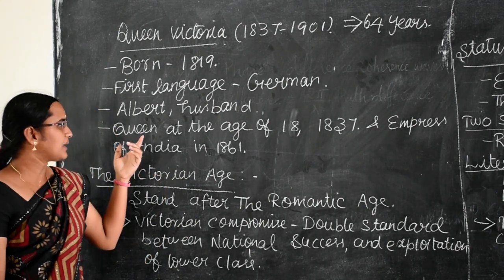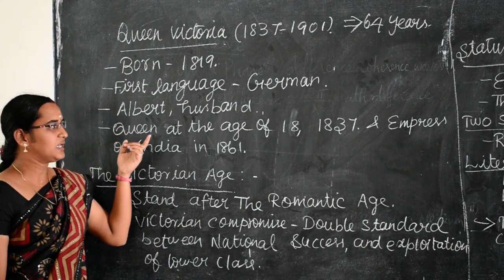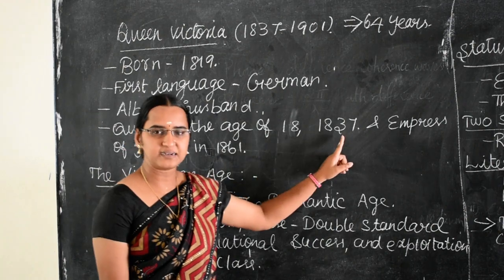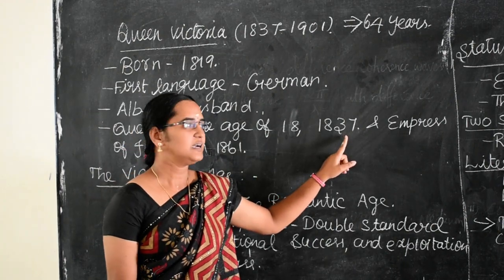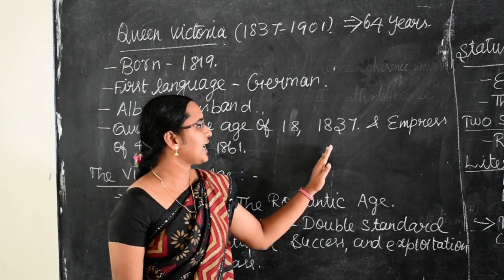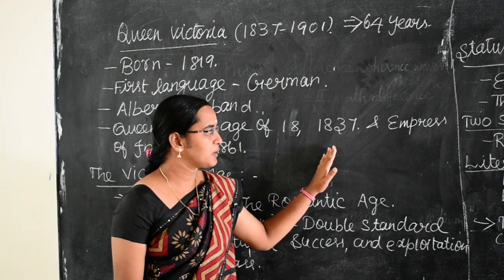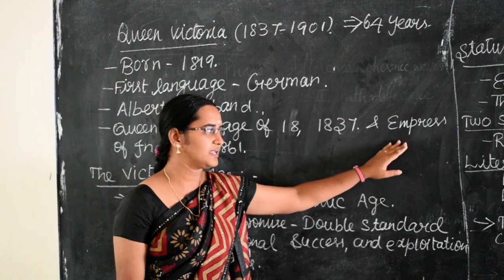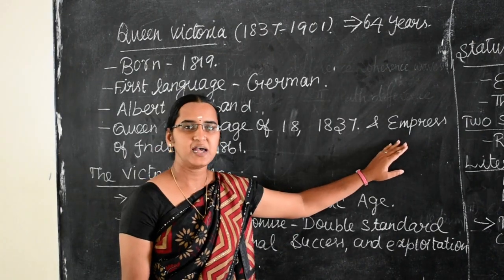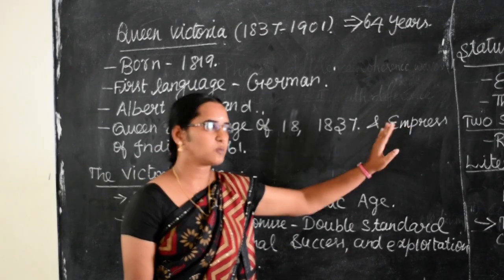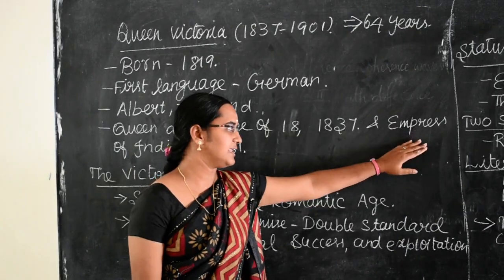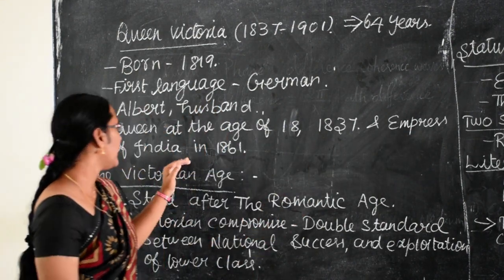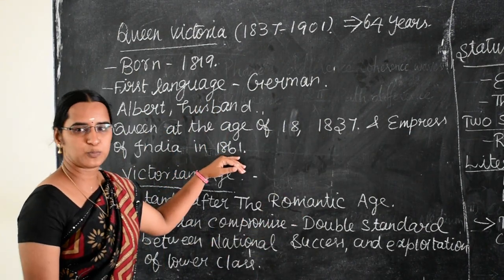This couple was blessed with nine children. She was appointed as the Queen of England at the age of 18 in 1837. During the time of Queen Victoria, England colonized so many continents in the world, and they also colonized India. She became the Empress of India in 1861.